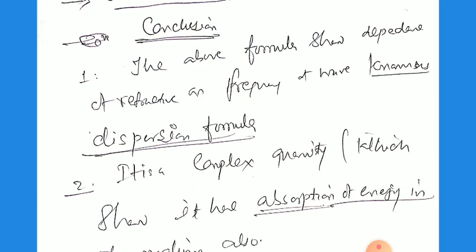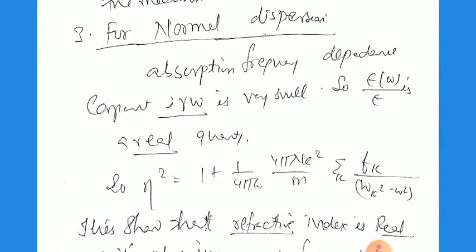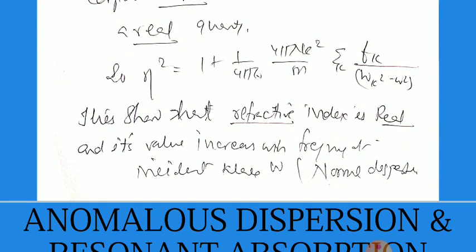We can conclude: first, the formula shows the dependence of the refractive index on the frequency of the wave — this is the dispersion formula. Second, it is a complex quantity showing that absorption of energy by the medium is possible. Third, for normal dispersion, the damping term iγω is very small, so ε depends on ω as a real quantity. Thus n² = 1 + (Ne²/mε₀) Σₖ Fₖ / (ωₖ² − ω²), which is real, showing the refractive index increases with frequency — called normal dispersion.